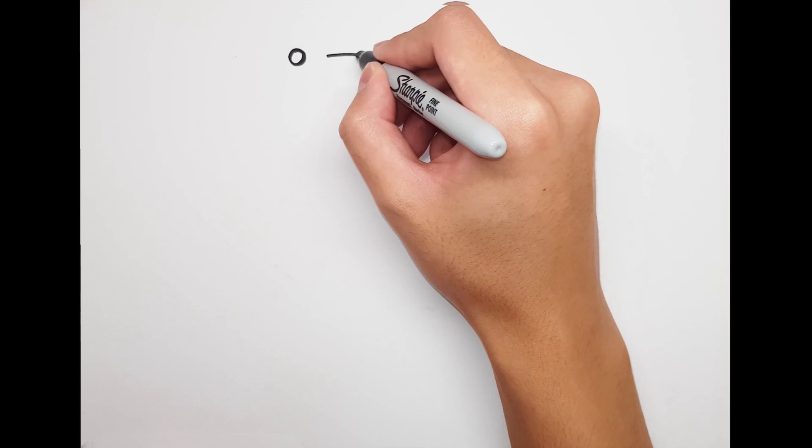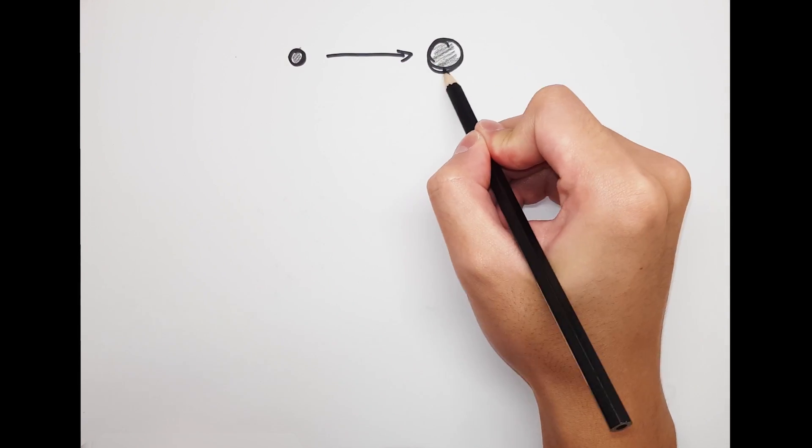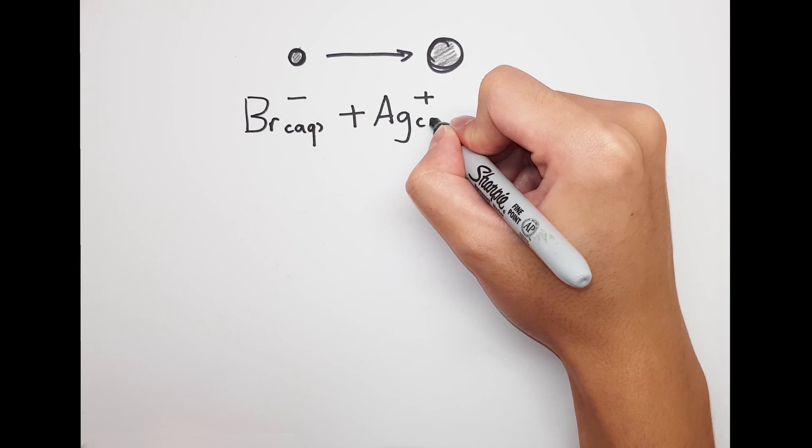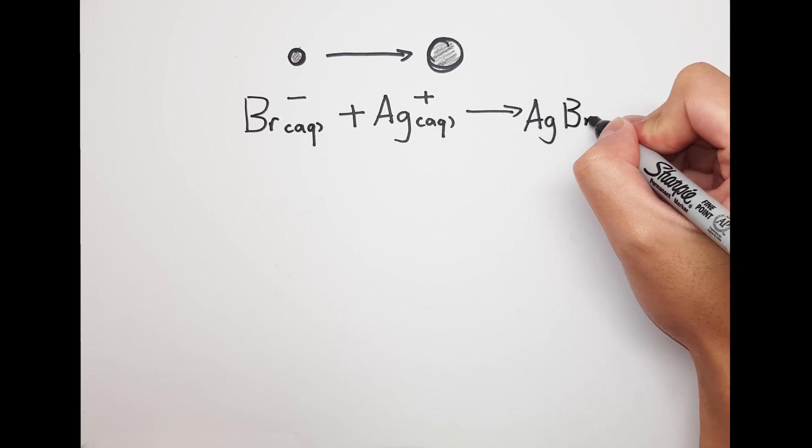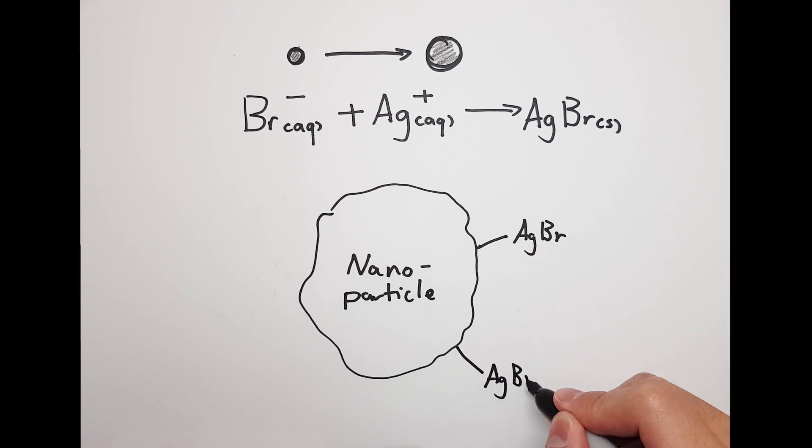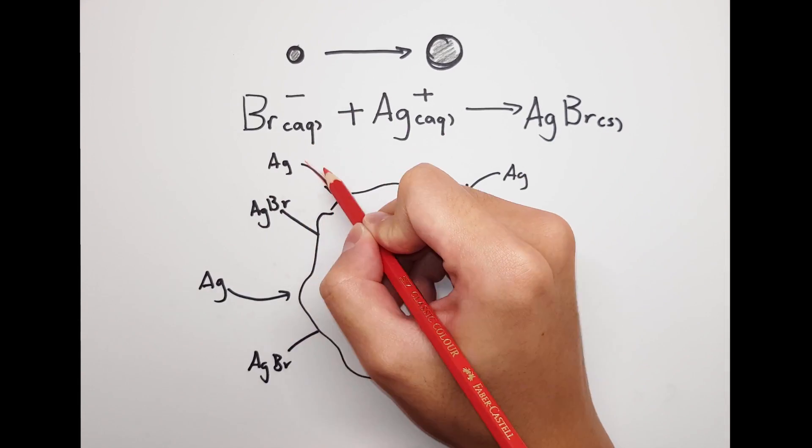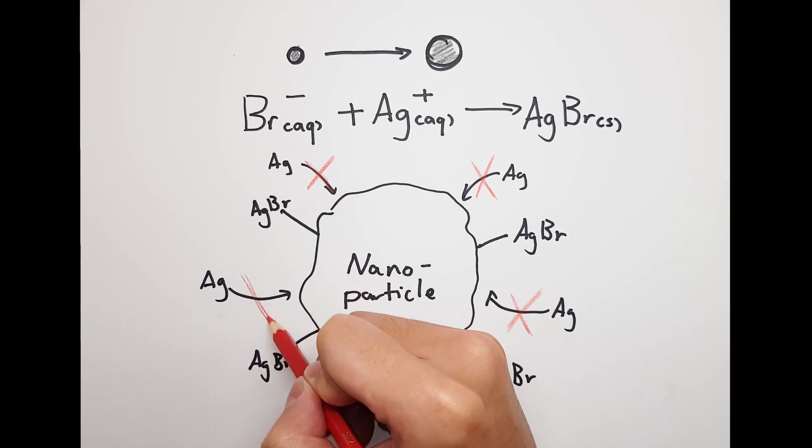Nanoparticle size can be changed by adding different amounts of potassium bromide as they form. The bromide ions will react with the silver ions on the surface of the nanoparticles and form solid silver bromide. Silver bromide is not very soluble, so they remain on the surface of the silver nanoparticles, blocking the site for further aggregation, restricting the size of nanoparticles produced.